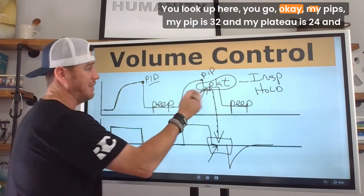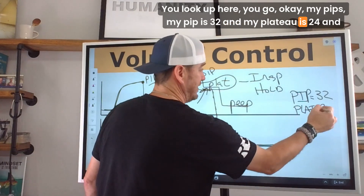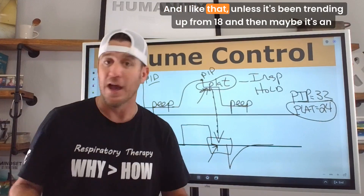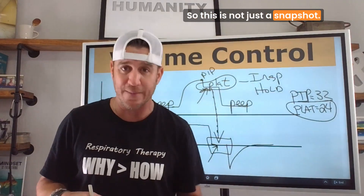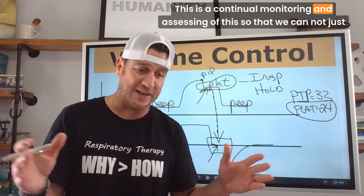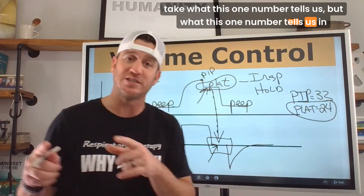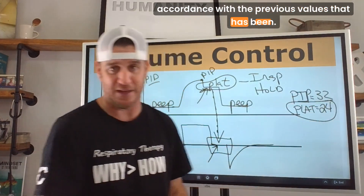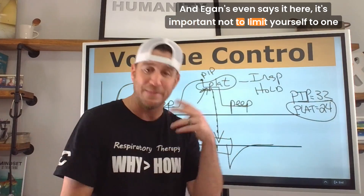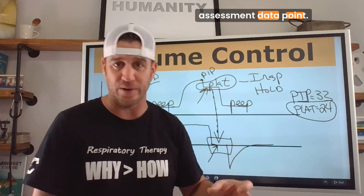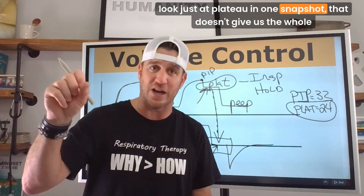So looking at the waveform, if your PIP is 32 and your plateau is 24, that's less than 28 cmH2O — which is good. However, if it's been trending up from 18, that may be an indication of a developing problem. So this is not just a snapshot; it's a continual monitoring and assessment. We can't take just one number in isolation — we need to look at that number in context with previous values and the trend over time.